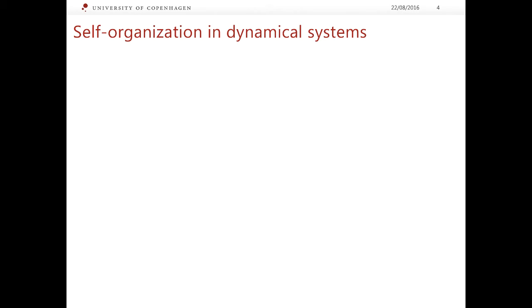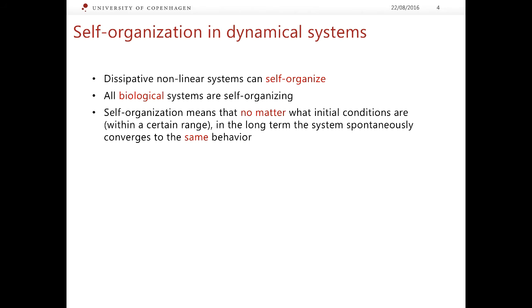In dissipative dynamical systems there is a remarkable phenomenon which is called self-organization. What does it mean that the systems can self-organize? Well, first of all we should point out that the living systems, that biological systems are actually self-organizing as well as many chemical systems and physical systems. In the language of dynamical systems it means that we can set initial conditions in such a system more or less at random within a certain range, a certain phase volume. But in the long term the system will spontaneously converge to the same sort of behavior, to the same behavioral pattern.